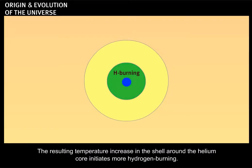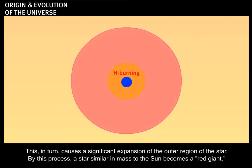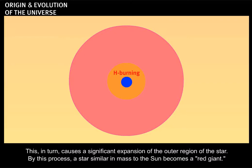The resulting temperature increase in the shell around the helium core initiates more hydrogen burning. This, in turn, causes a significant expansion of the outer region of the star. By this process, a star similar in mass to the Sun becomes a red giant.